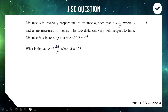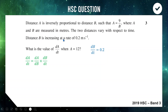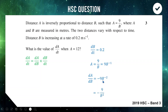We're trying to find dA/dt. We don't have a relationship between a and t, but we have one between a and b, so we chain it with the related variable b: dA/dt = (dA/dB) × (dB/dt). From the question, dB/dt = 0.2. Using a = 9/b, rewritten as a = 9b⁻¹, we differentiate to get dA/dB = −9b⁻², which we rewrite as −9/b².